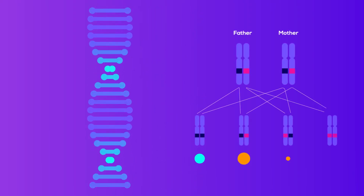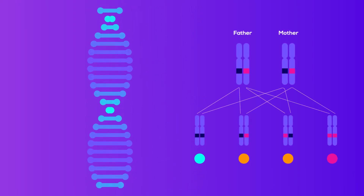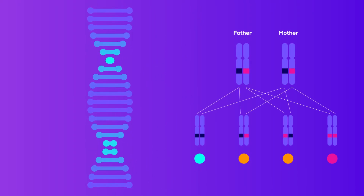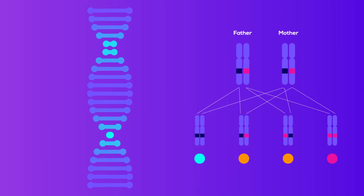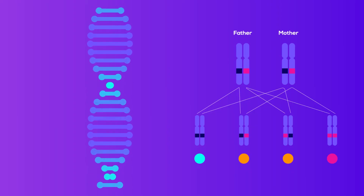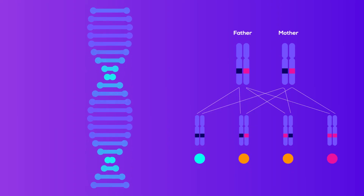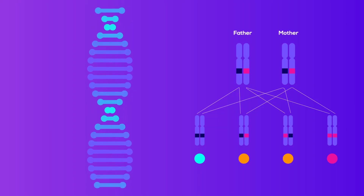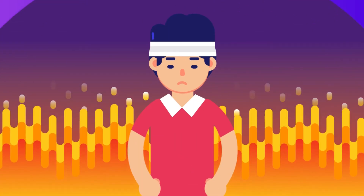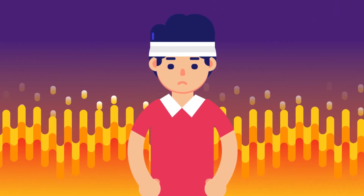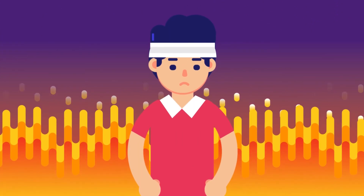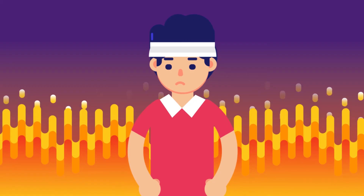CIP is inherited in an autosomal recessive fashion, meaning you need to have two copies of the mutated gene to get the disease. If you have only one mutated gene, you will act as a carrier but will not get the disease.